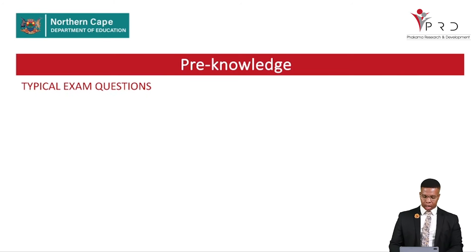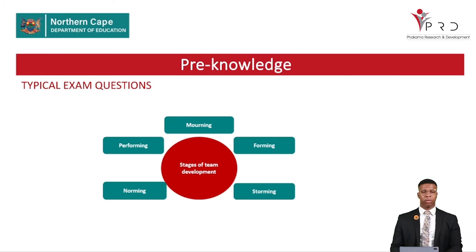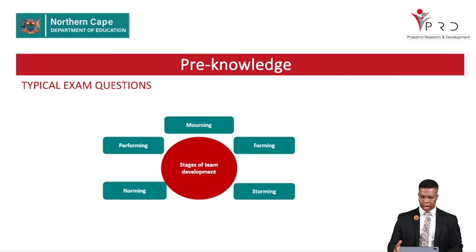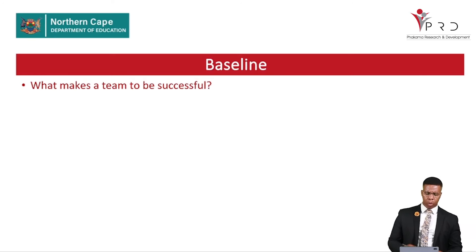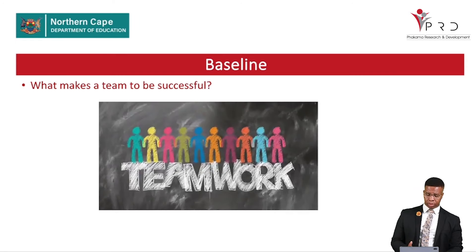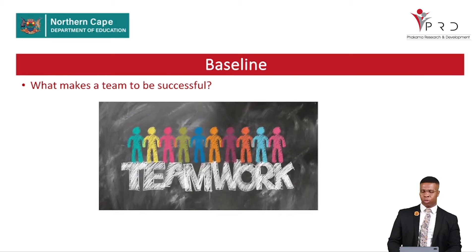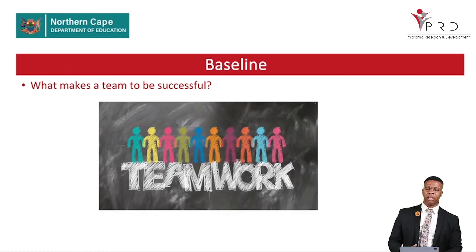In our previous lessons we looked at typical exam questions on the stages of team development. The stages include forming, storming, norming, performing, and adjourning. We also looked into how the assessor can structure exam questions on those stages. Our baseline question is: what makes a team successful? The answer is teamwork — hence we discuss the criteria and characteristics of a successful team. The key term is 'team,' which refers to a group of people who work together to achieve a common goal.